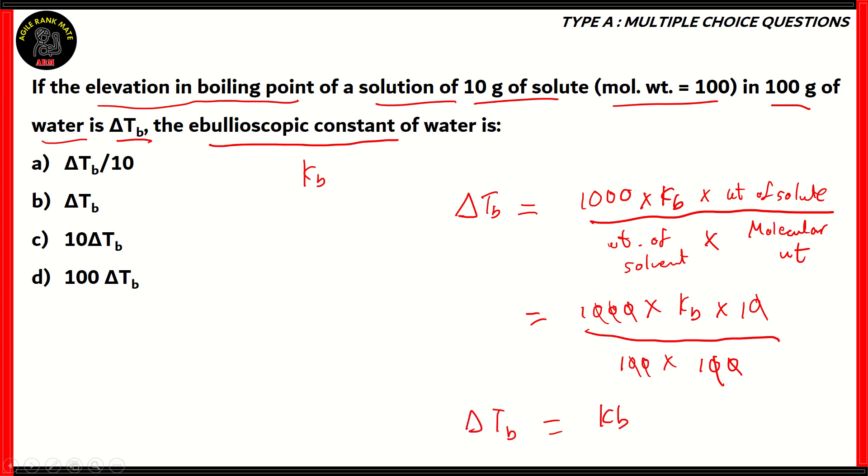Delta Tb, or the elevation in boiling point, is equal to the ebullioscopic constant of water. So therefore, among the following options, it is clear that option B turns out to be the right option. The other options have increments or fractions of the same quantity, which is incorrect. Therefore, option B is the right option.